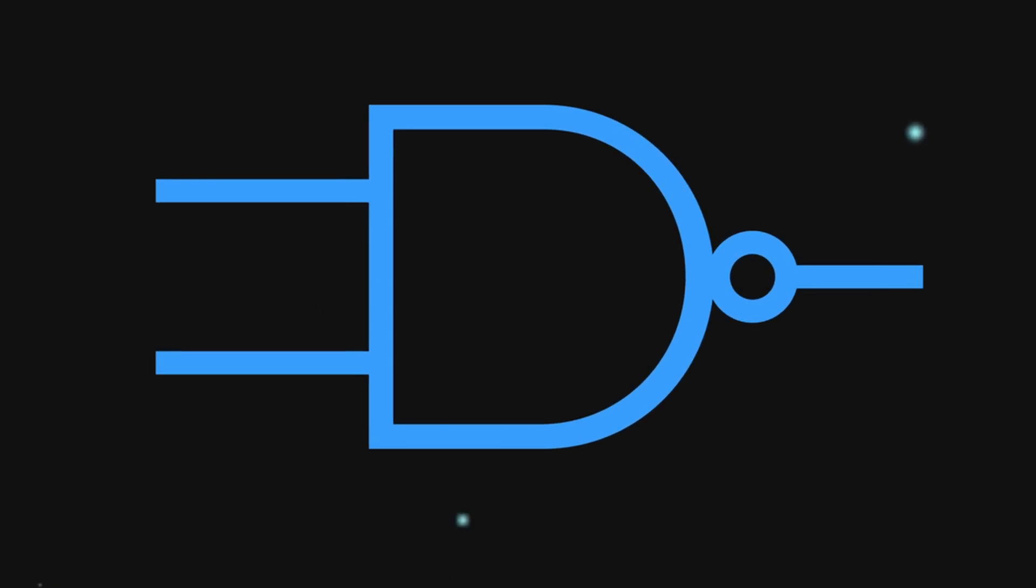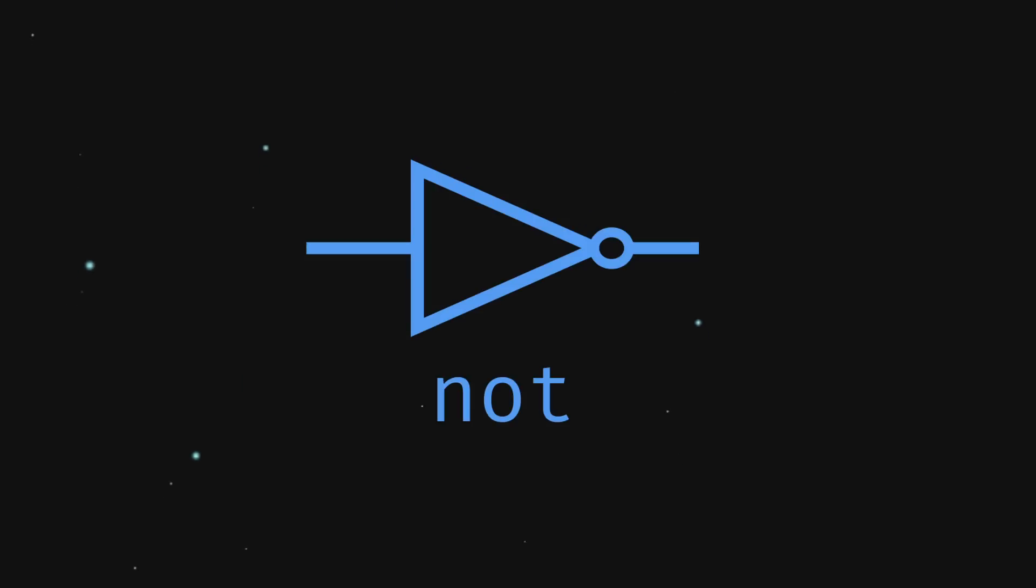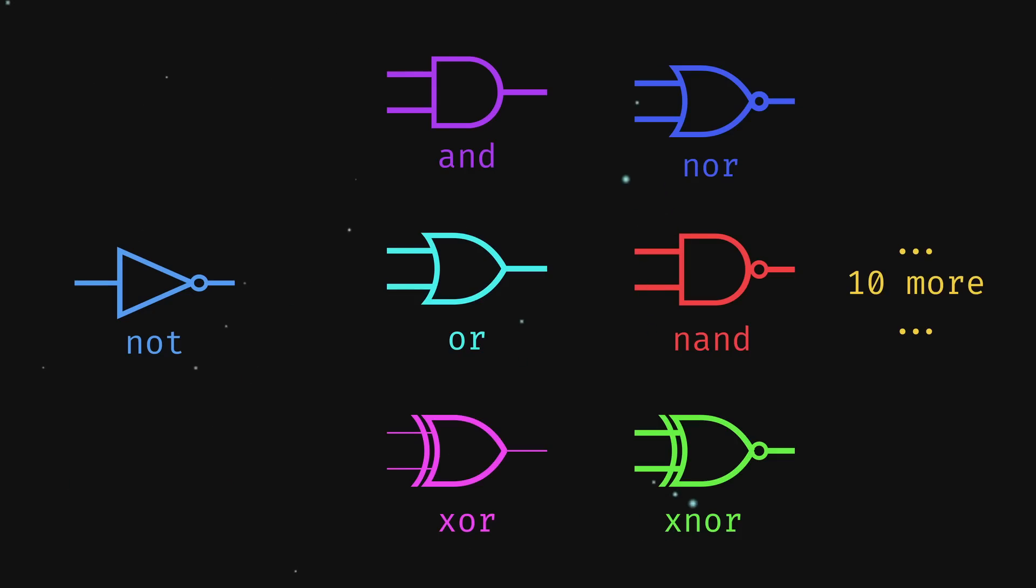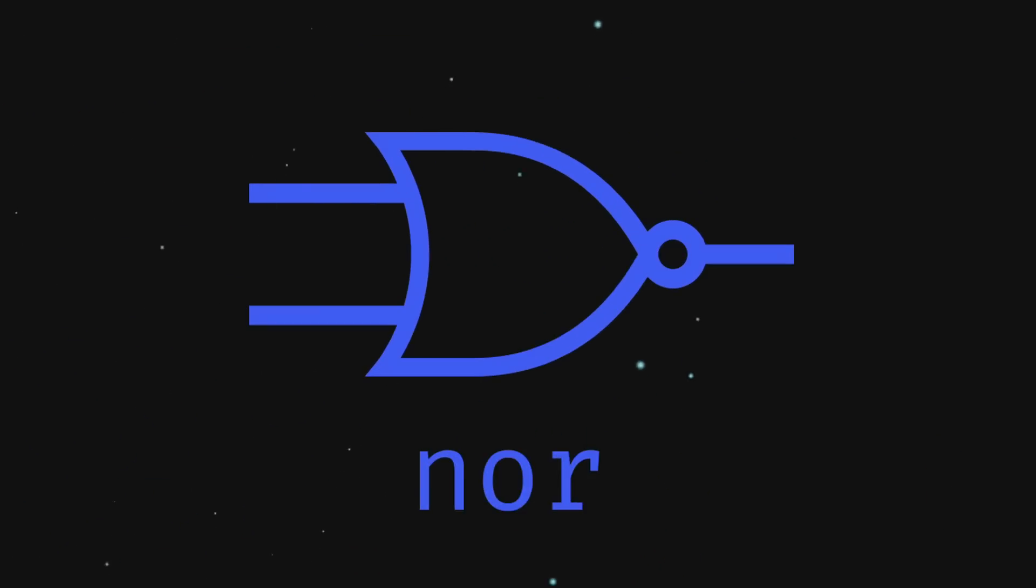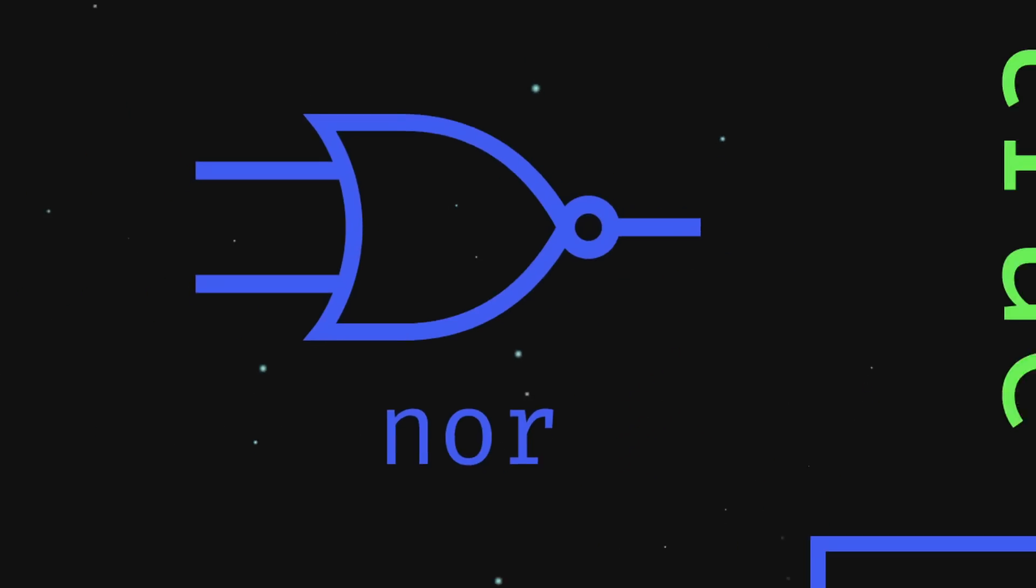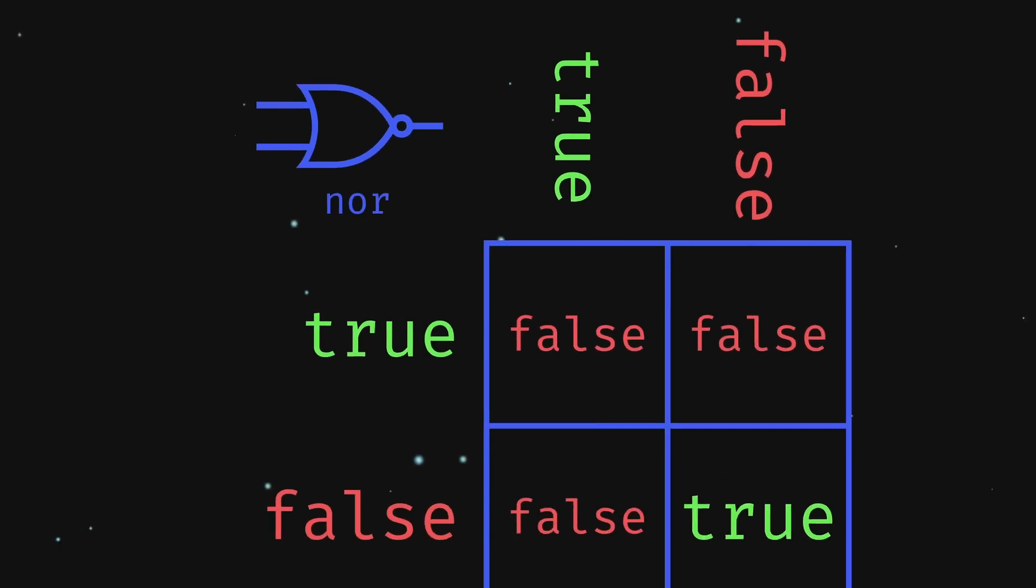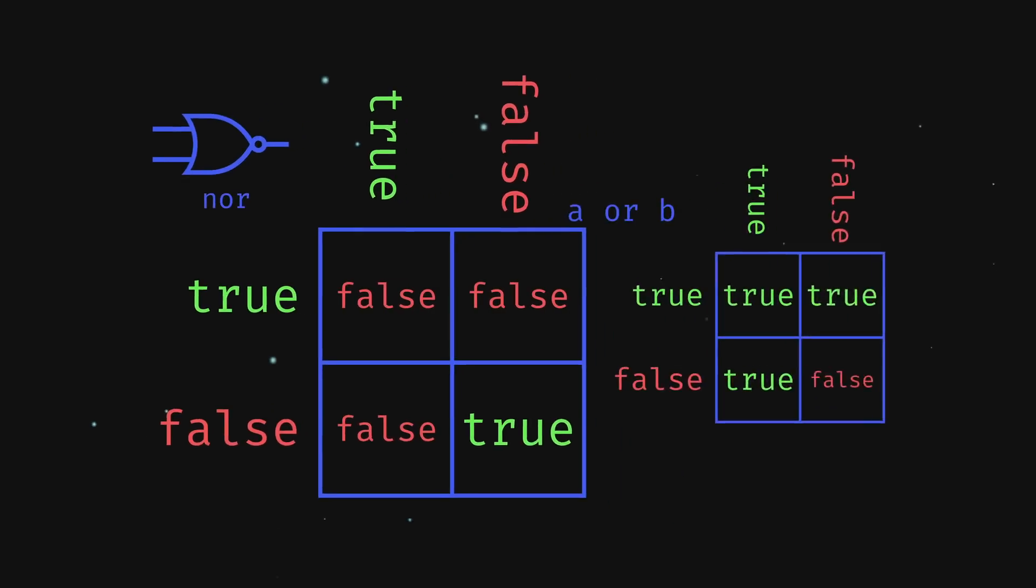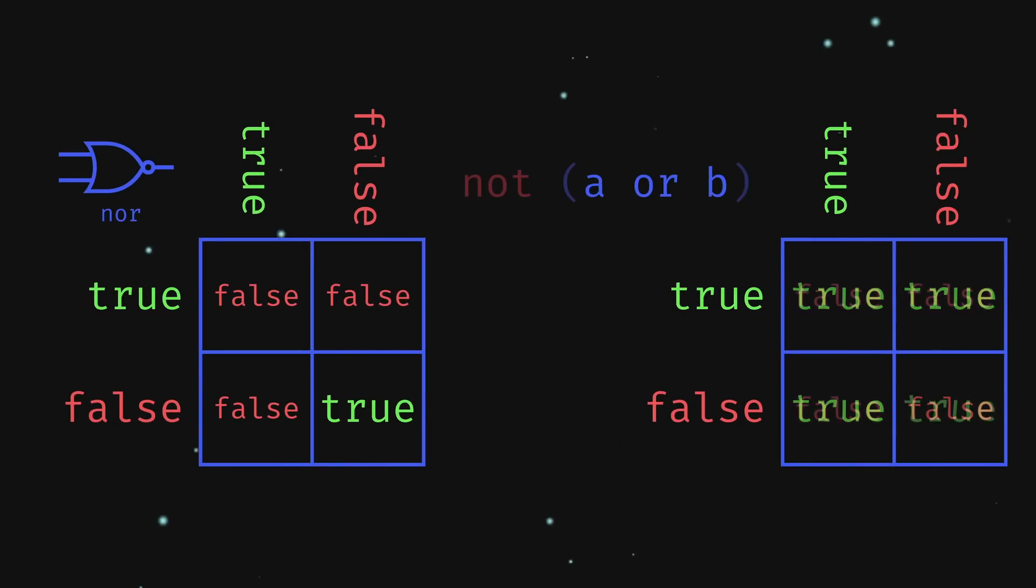When it comes to these logic gates, you have the not gate and then the 16 binary gates, but you don't actually need all of that. Look at this NOR gate right next to the subscribe button that you should probably click on. It takes two binary inputs and returns true only if both inputs are false. Since a OR b returns false only if both inputs are false, then not (a OR b) would have the same result as NOR.